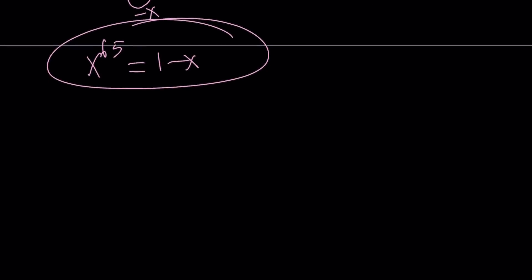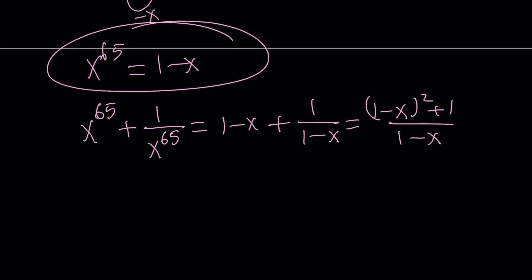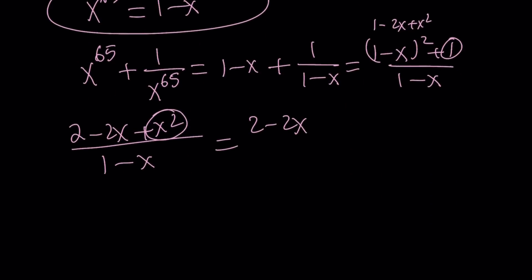This is really cool because now in my expression, I have x to the power of 65 plus 1 over x to the power of 65, which can be replaced with 1 minus x plus 1 over 1 minus x. And now I can make a common denominator. 1 minus x times 1 minus x is 1 minus x squared. And then plus 1 divided by 1 minus x. But 1 minus quantity 1 minus x quantity squared is 1 minus 2x plus x squared. With the addition of the other one, it becomes 2 minus 2x plus x squared divided by 1 minus x. And then now x squared can be replaced with x minus 1.